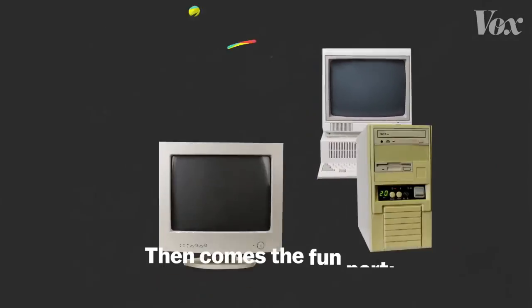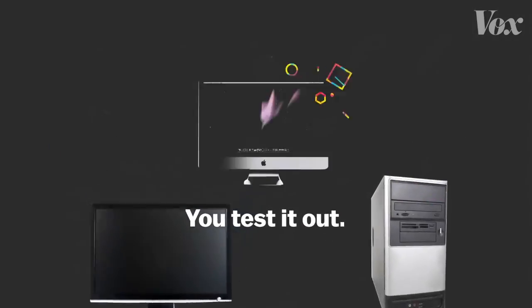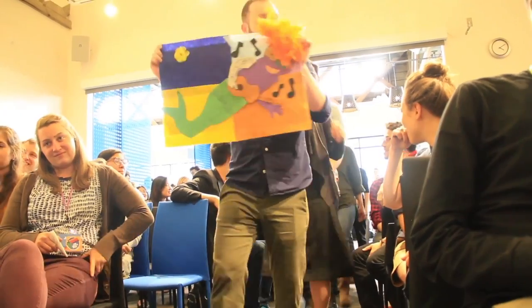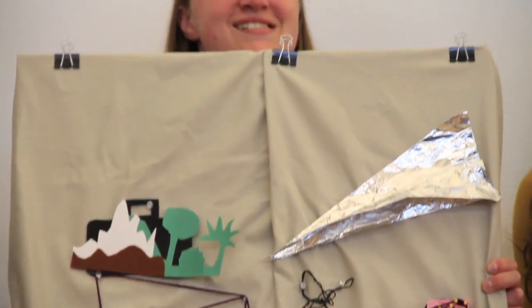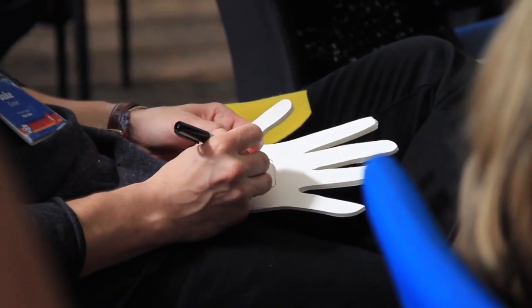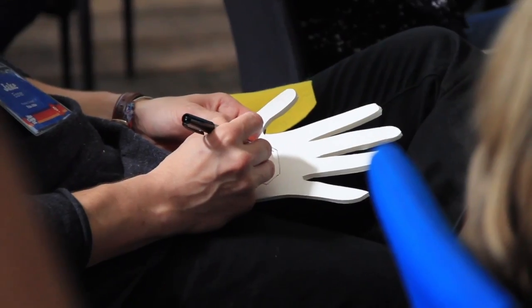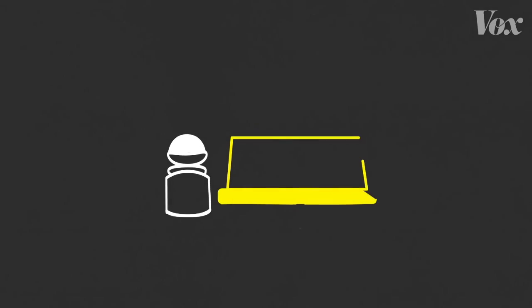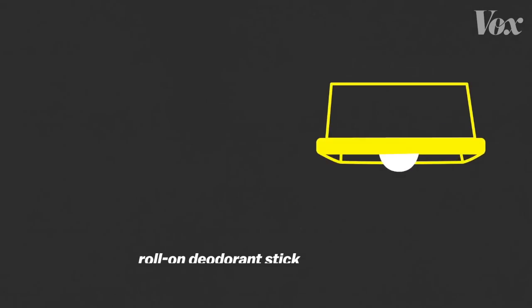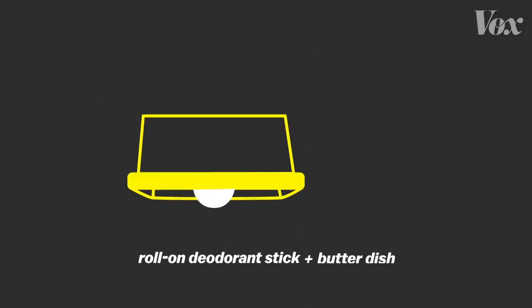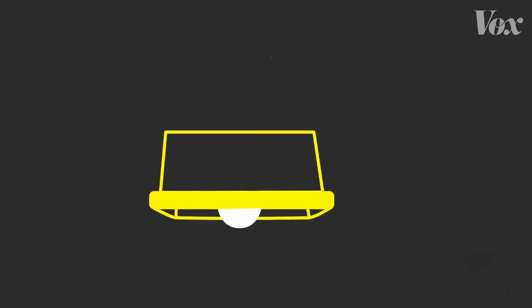Then comes the fun part: you test it out. Right at the beginning of the process, it might be a really simple cardboard model or a quick sketch, or if it's digital, it might be a quick digital simulation. And you try it out with people. Sometimes those drafts can be pretty rough — the first prototype for the mouse was a roll-on deodorant stick and a butter dish from a Palo Alto Walgreens.